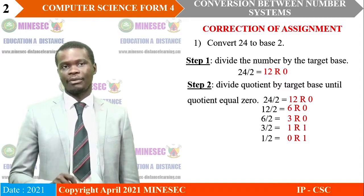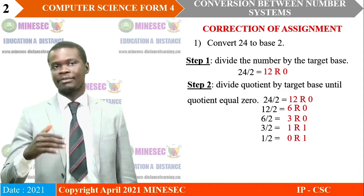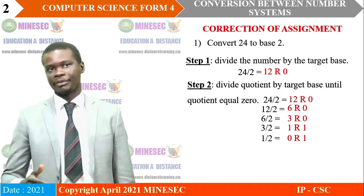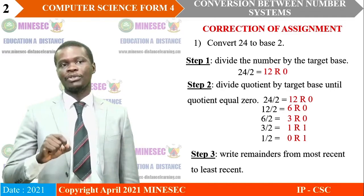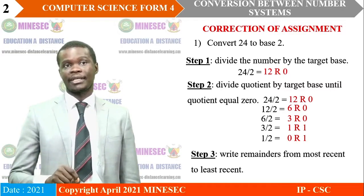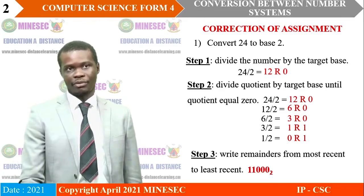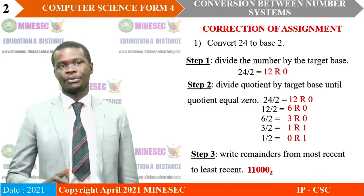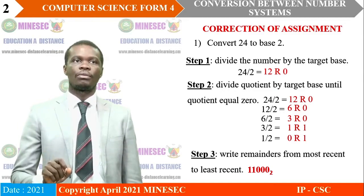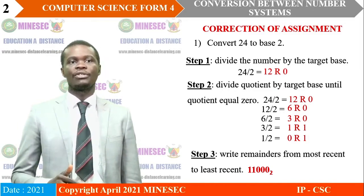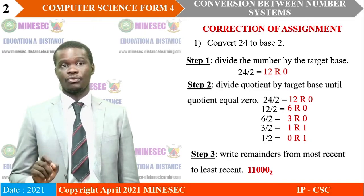What we do next is start from the most recent remainder and write the number. In step 3, we write the number from the most recent remainder to the least recent remainder. That gives us the answer 1 1 0 0 0 0 base 2. So 24 base 10 is equivalent to 1 1 0 0 0 base 2.